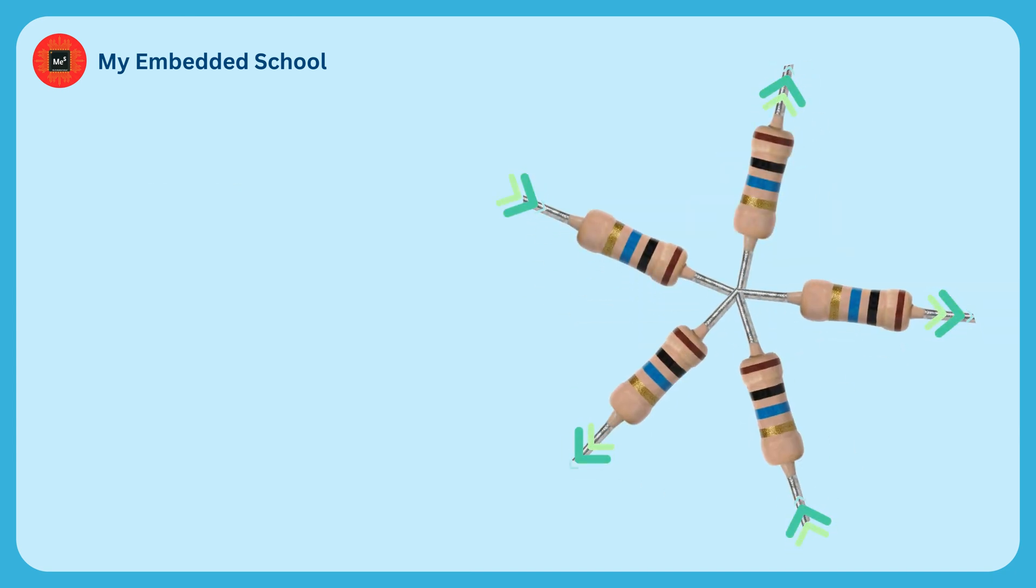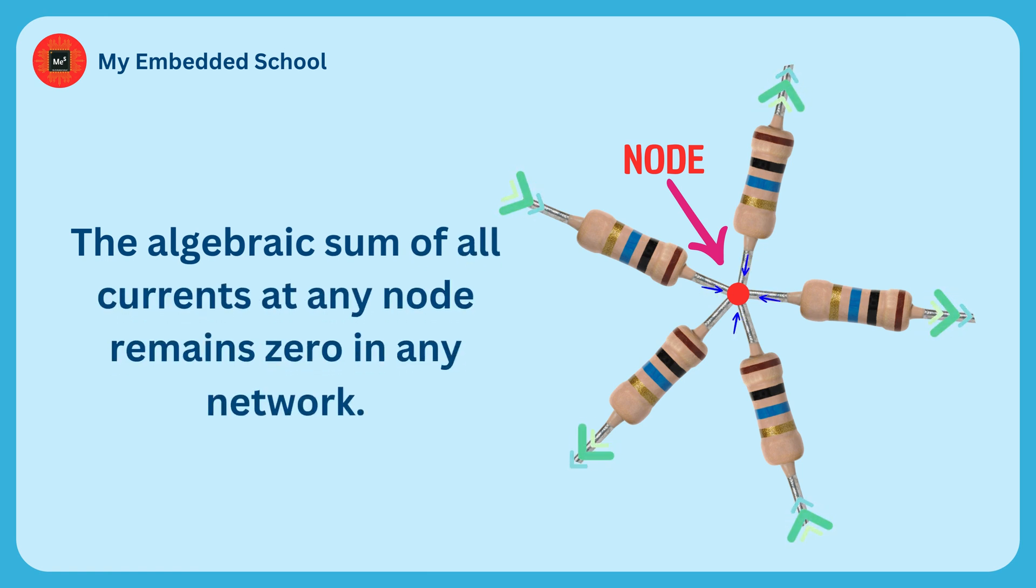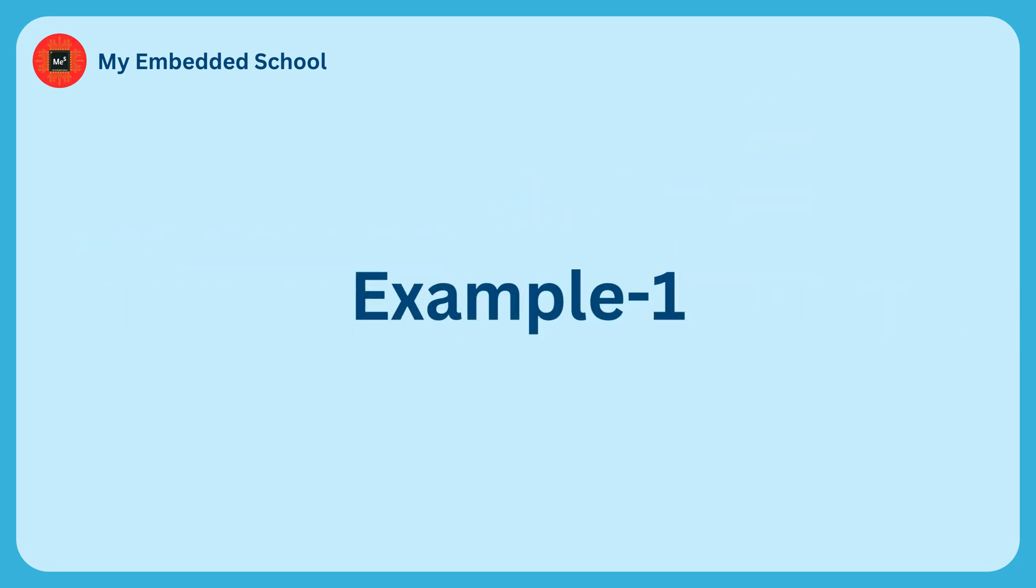Kirchhoff's Current Law states that the algebraic sum of all currents at any node remains zero in any network. We also call this law another way: the sum of all currents entering the node is equal to the sum of all currents leaving the node. We understand this law by taking one example.